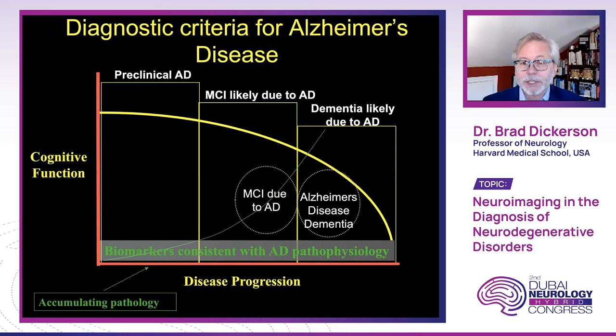Now we're able to say, for example, with diagnostic criteria for Alzheimer's disease, that a patient has preclinical Alzheimer's disease if they have biomarkers consistent with AD pathophysiology, or that if they're symptomatic and have MCI, it's highly likely due to AD or likely not due to AD based on those molecular biomarkers. And the same with dementia — highly likely due to AD, often referred to as Alzheimer's disease dementia, or highly likely not due to AD.